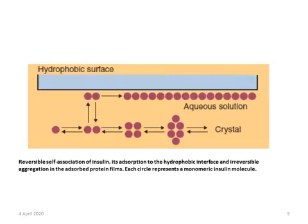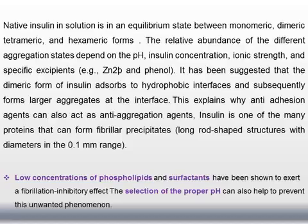This figure shows the proposed mechanism for aggregation of insulin in aqueous media through contact with a hydrophobic surface. Each circle represents a monomeric insulin molecule. The dimeric form of insulin is absorbed to the hydrophobic interfaces and subsequently forms larger aggregates at the interface. Insulin is one of the many proteins that can form fibrillar precipitates. Low concentrations of phospholipid surfactants and selection of the proper pH can also help to prevent this unwanted phenomenon.